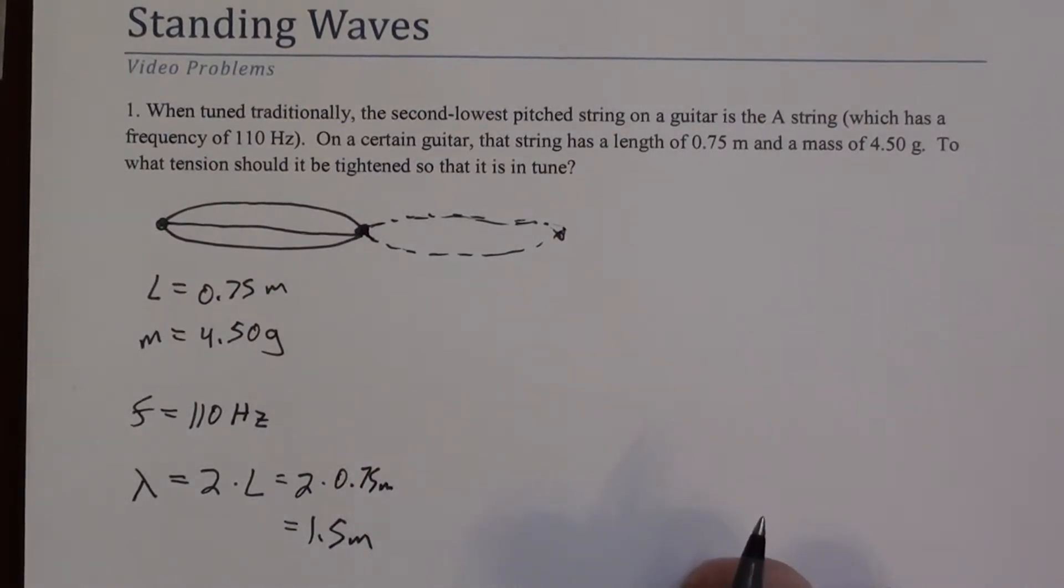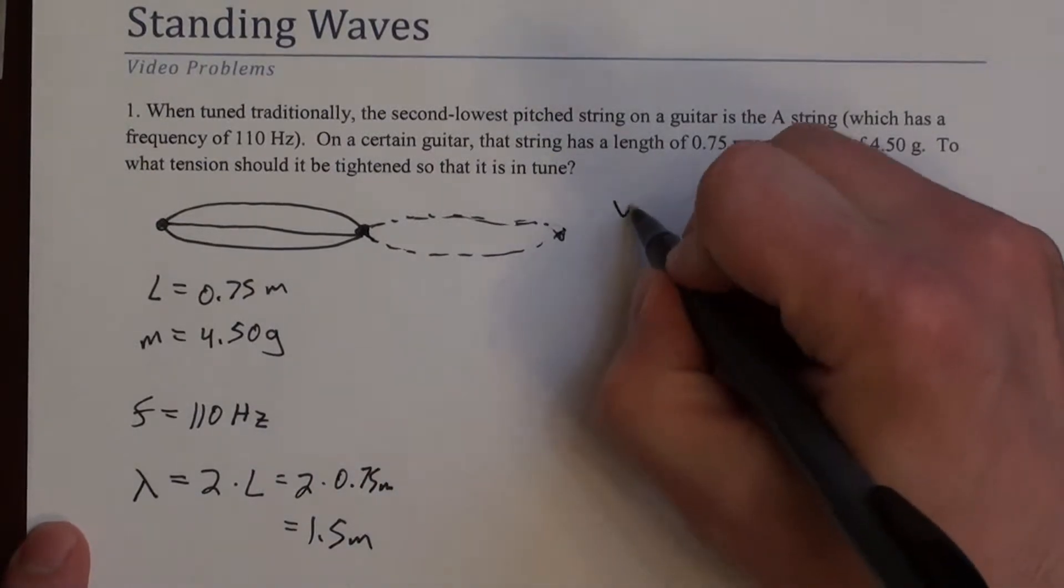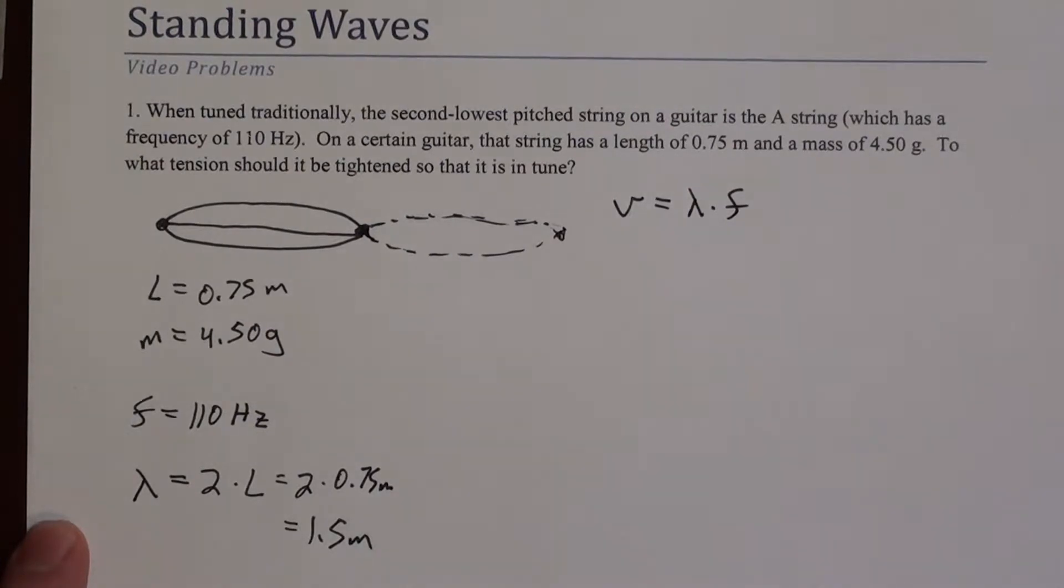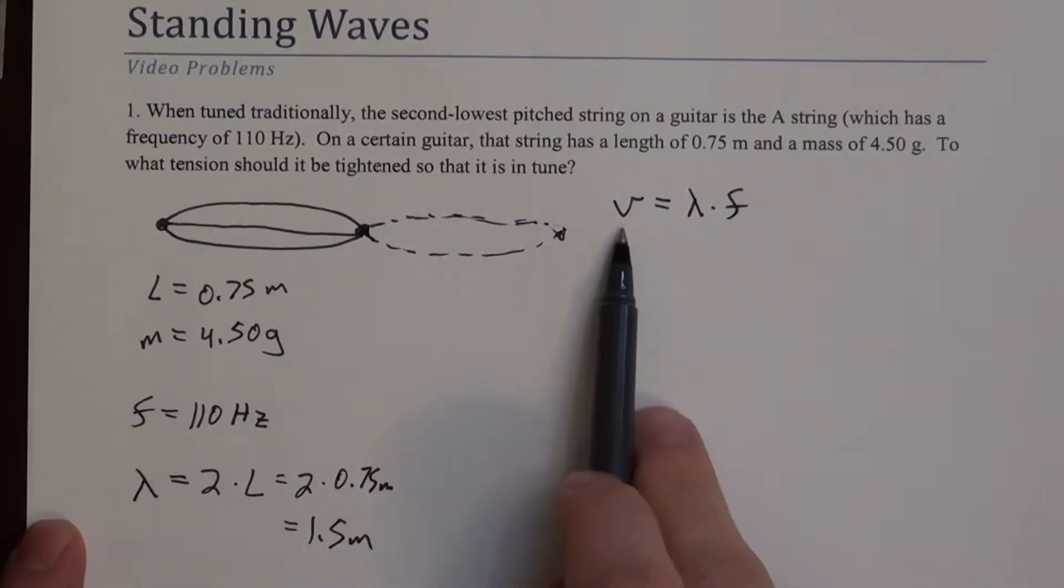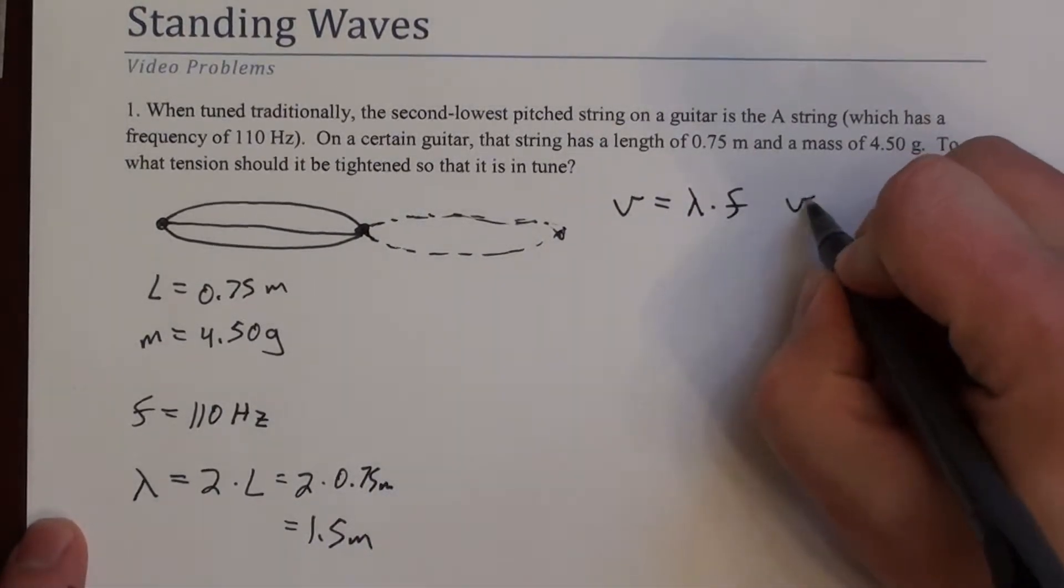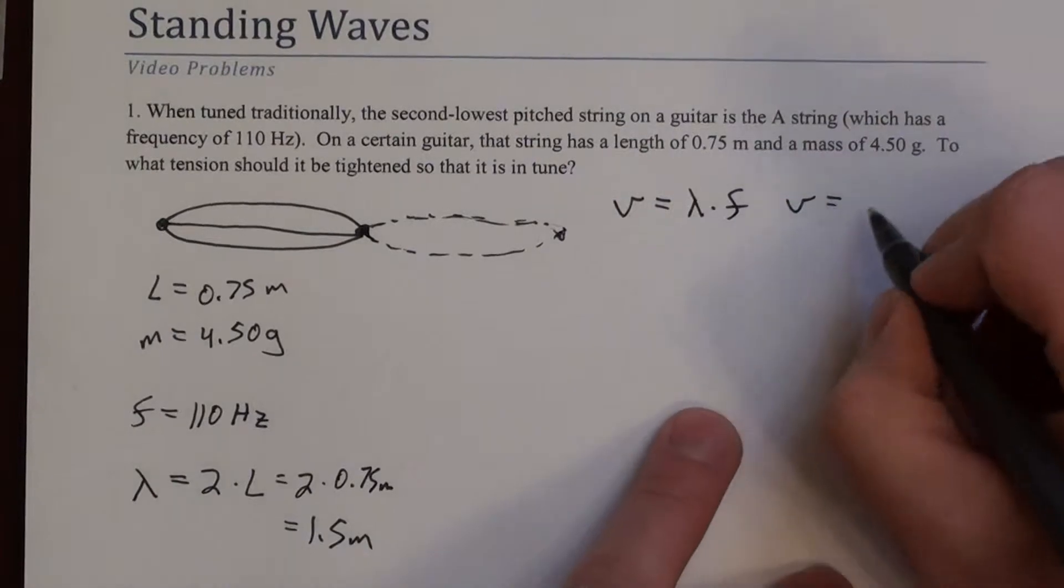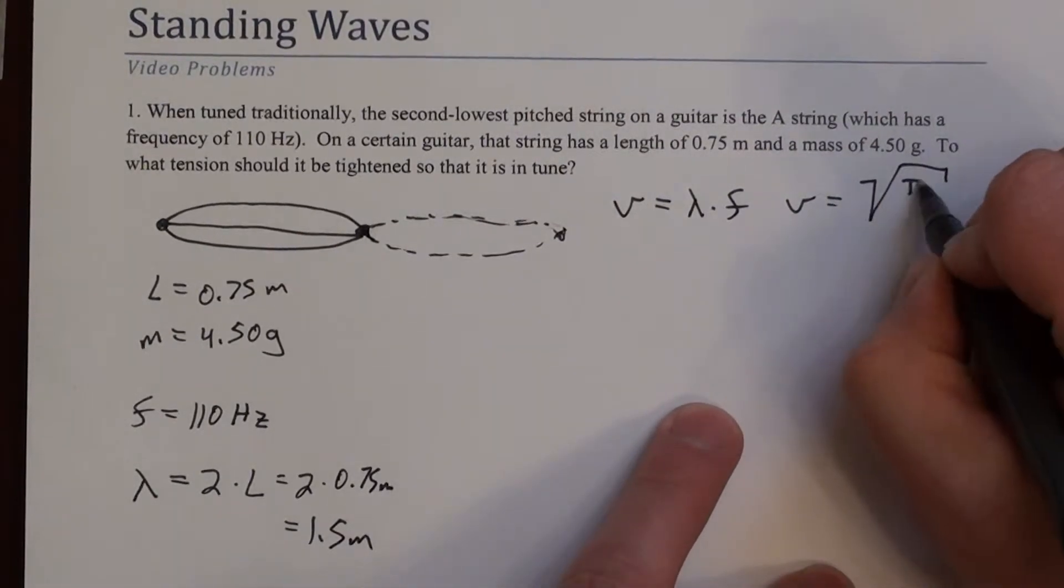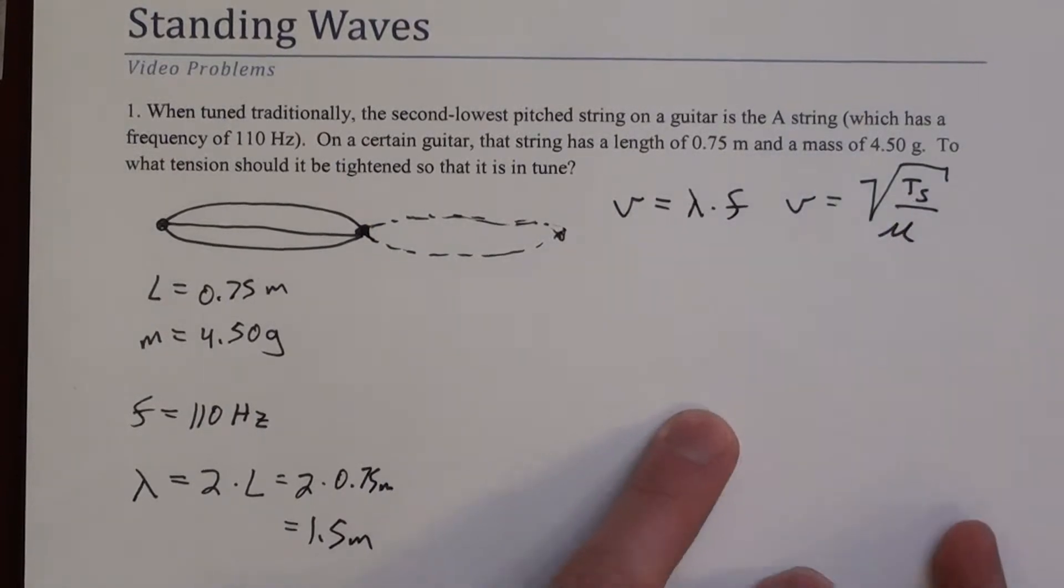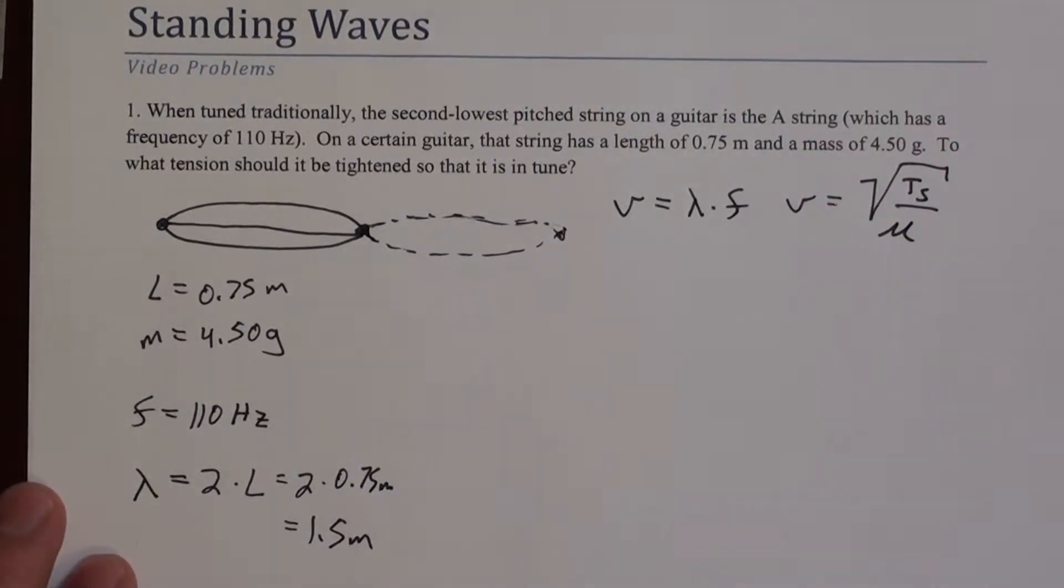So I can relate the frequency and the wavelength to a wave speed. I can say V equals lambda F. But I can also relate the wave speed to the tension in the string, which is exactly what I'm solving for. That equation is that V equals the square root of tension in the string, T_s, divided by μ. And μ is the mass per unit length.